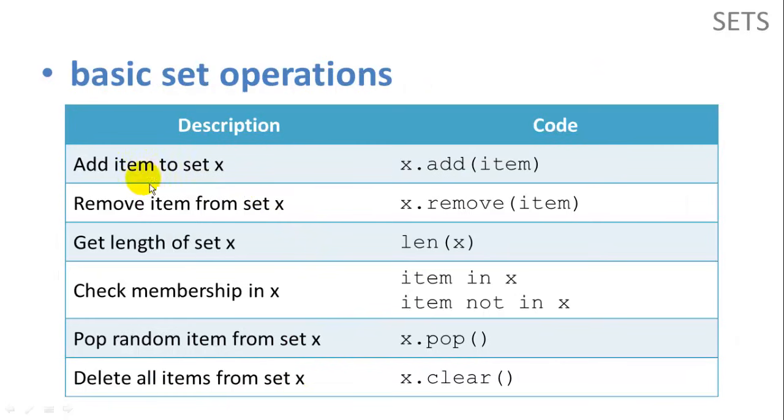So some basic set operations. We can add an item to set x by using x.addItem. Remove an item from set x using x.removeItem. Get length of set x using the len function. We can check membership in x by simply saying item in x or item not in x. That's going to return a Boolean true or false. We can pop a random item from set x using the pop function. We don't know which item is going to be popped. It's arbitrarily selected. And we can delete items from set x by saying x.clear. We'll completely empty our set.